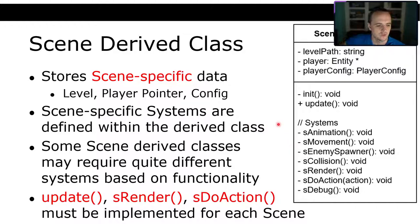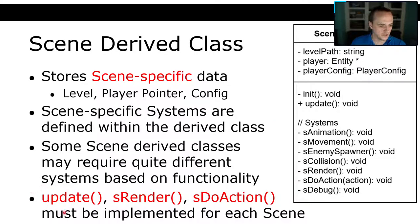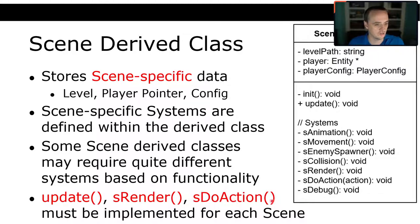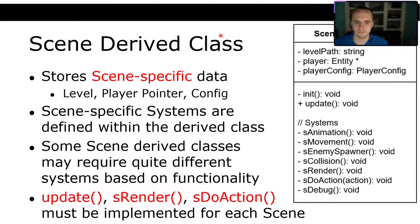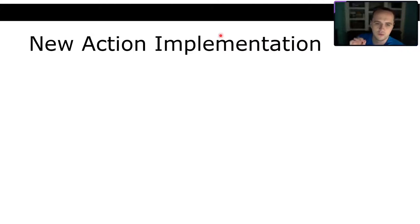We're going to require that three functions be implemented for each scene: the update function, which is the game world tick that updates all physics; the drawing function; and the doing of actions. These must be implemented for each scene. Now we're going to show how we transition from hard-coded W-means-up to a more robust action system.